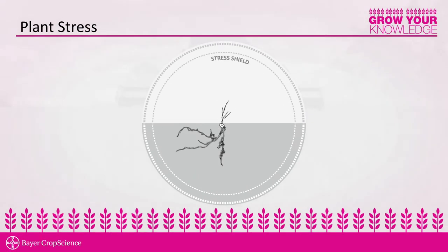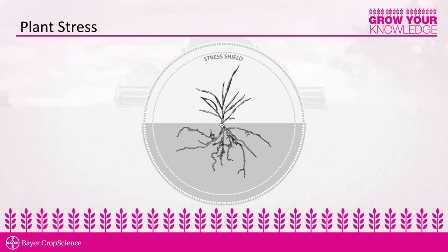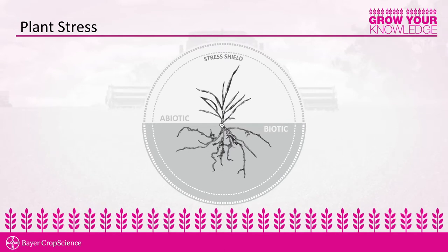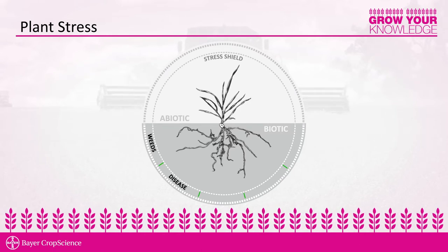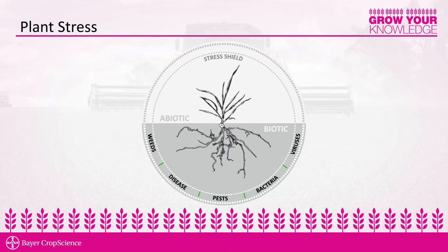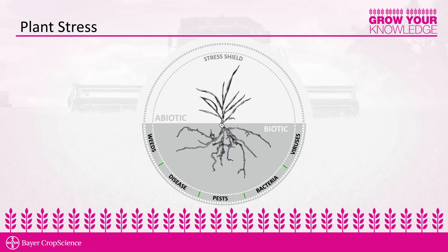There are two categories of plant stress: abiotic and biotic. Biotic or biological plant stress includes such things as weeds, plant diseases, and insects. A unique aspect of Stress Shield is that it does have a benefit protecting plants against abiotic or environmental stresses.